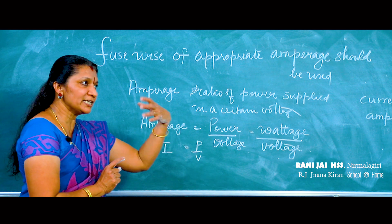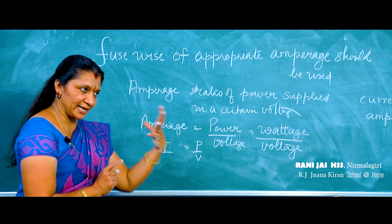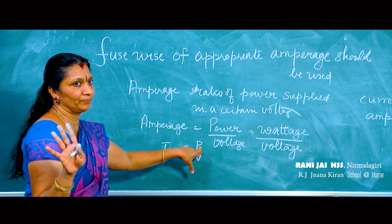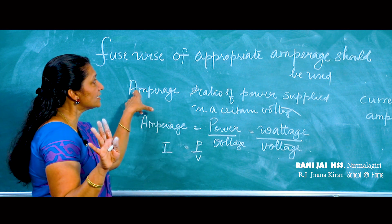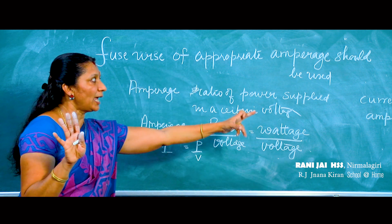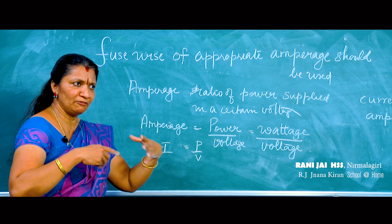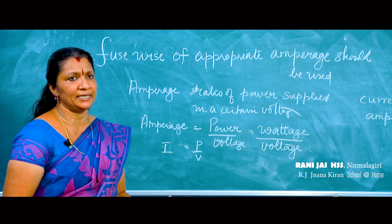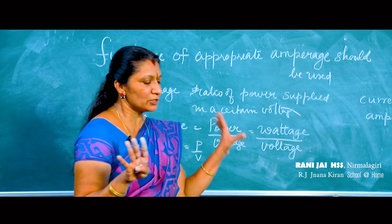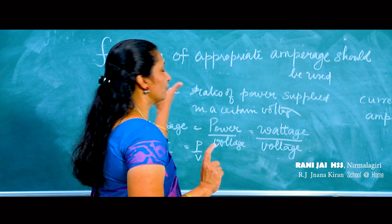The fuse is introduced according to that amperage. If the current exceeds that maximum limit, the fuse wire will break the circuit. So fuse wire of appropriate amperage should be used — if the current exceeds that amperage, the fuse wire will break. This is the first important point to note when using a fuse wire.